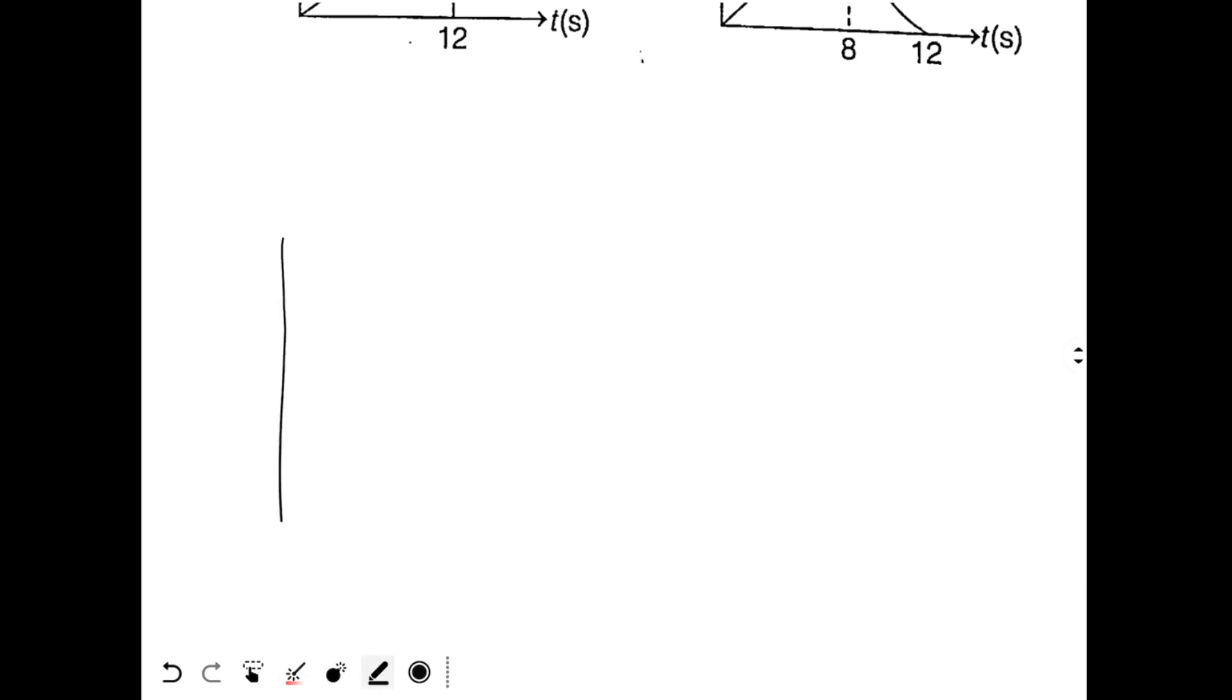So cliff height is given to be 240 meter and we have the two stones, 10 and 40. Let's say this is your ground and the cliff. This is 240 meter. I have got two stones, let's name the stones as A and B. So stone A is thrown with speed of 10 meter per second and stone B is thrown with speed of 40 meter per second.